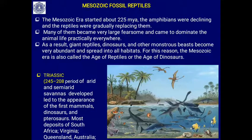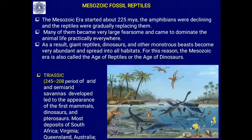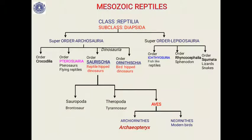For this reason, the Mesozoic era is called the Age of Reptiles, Age of Dinosaurs, or the Golden Age of Reptiles. It started with the Triassic period about 245 million years ago up to 208 million years ago — a period when arid and semi-arid savannahs developed. Abundant fossils have been recovered from sediments of this period from South Africa, Virginia, Queensland, Australia, Germany, and Europe.